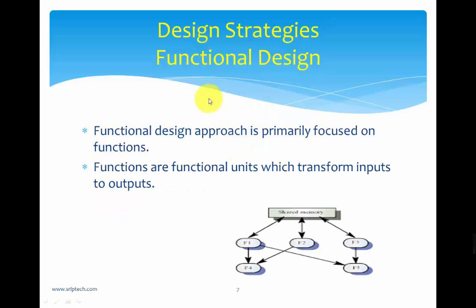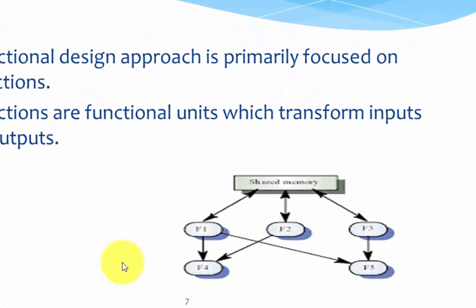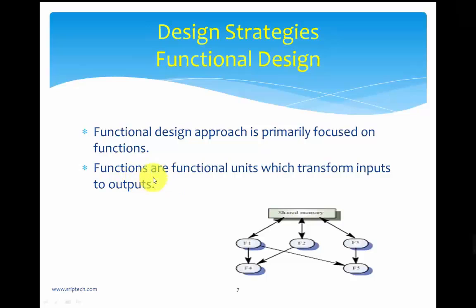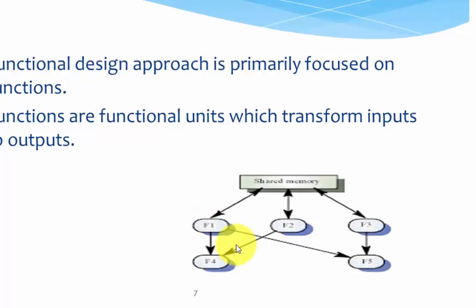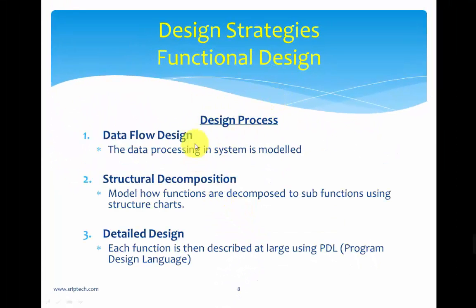Functional design is primarily focused on functions. Functions are entities that can interact with other functions for data transfer and can share common memory. Functions are functional units which transform inputs to outputs. The functional design process has three steps: the first is data flow design, the second is structural decomposition, and the third is detailed design. Data flow design models data processing in a system — specifically how input is converted to output.